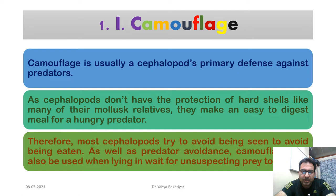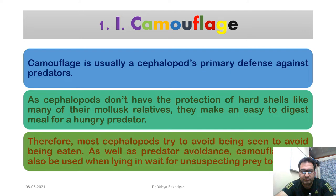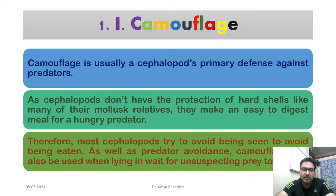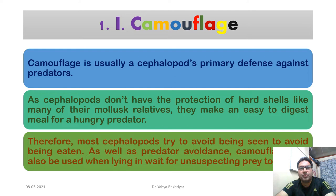Camouflage is the cephalopod's primary defense against predators. Cephalopods don't have strong protective mechanisms like poisons, hard shells, exoskeletons, horns, antlers, mucus, or scales. Without the protection of hard shells, like many other mollusc relatives, they make an easy-to-digest meal for hungry predators. So nature has given them the ability to protect themselves by changing color.